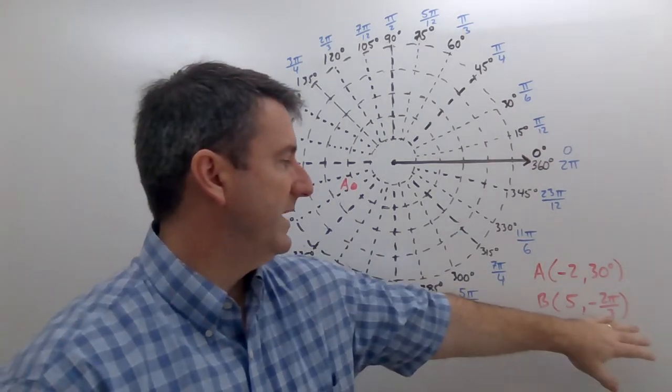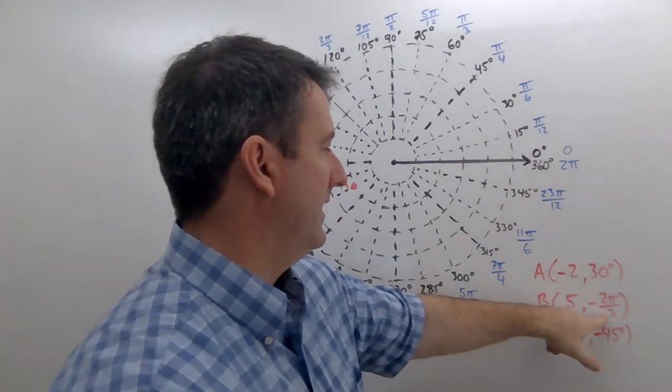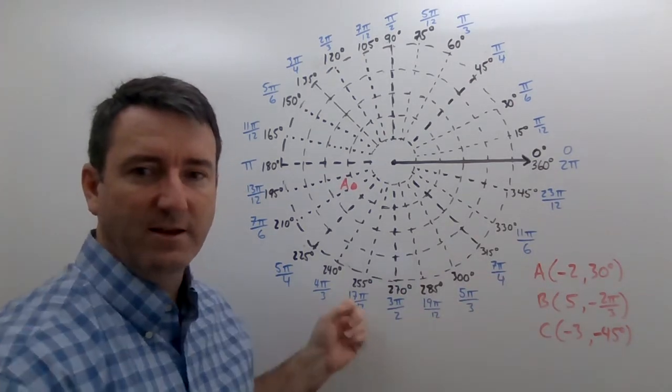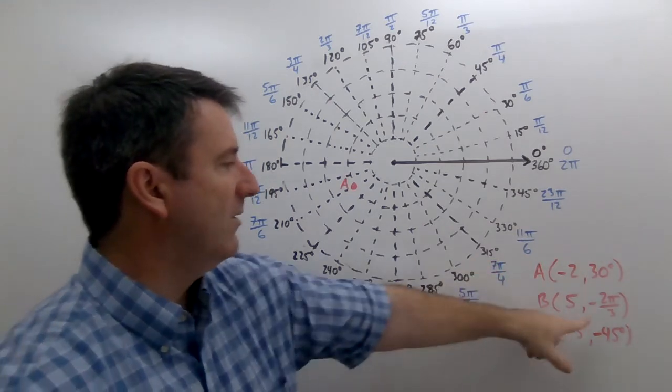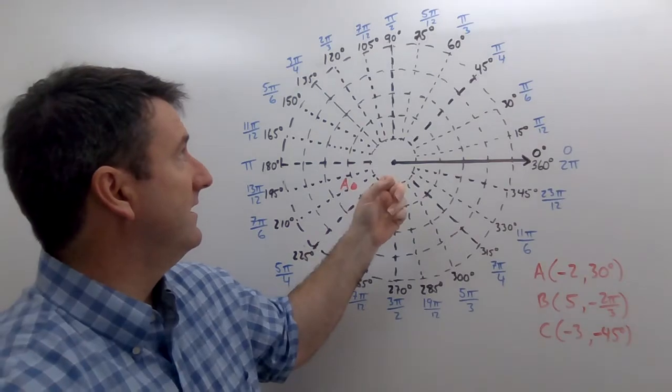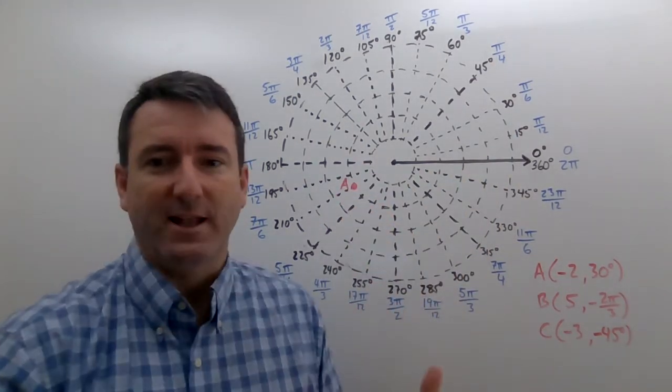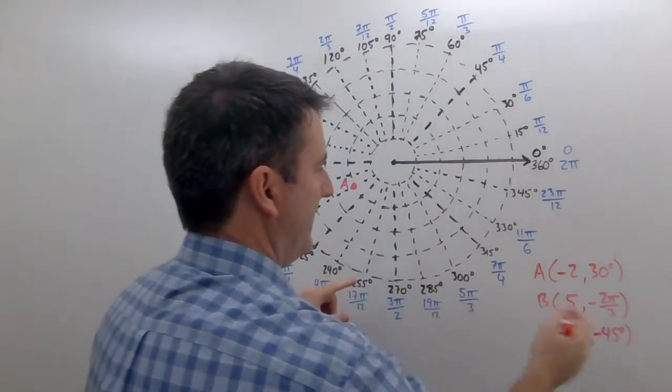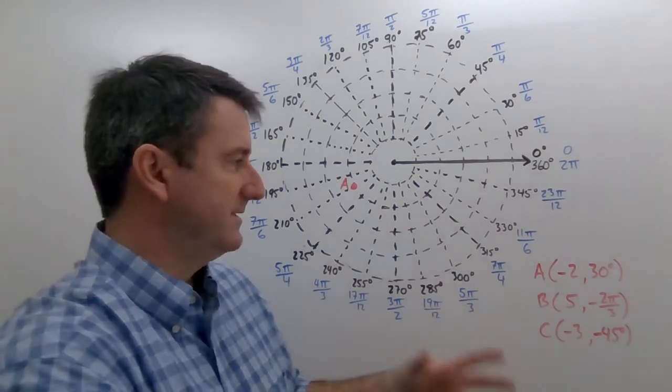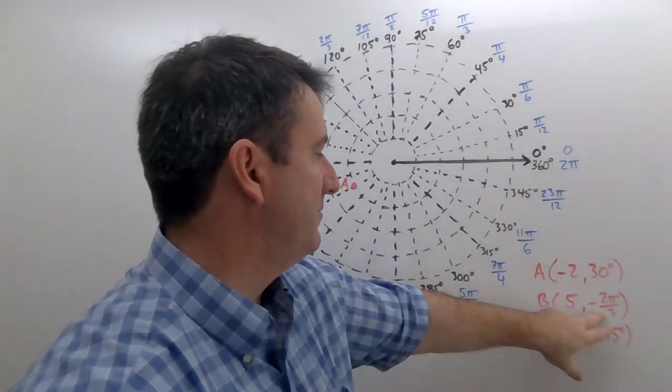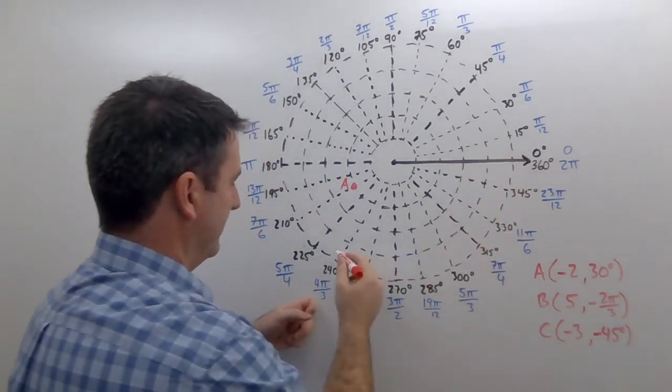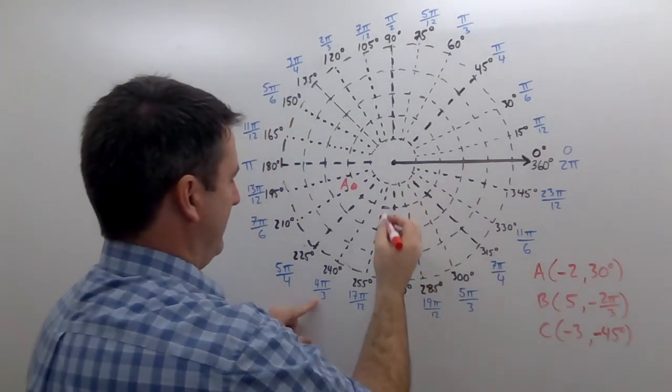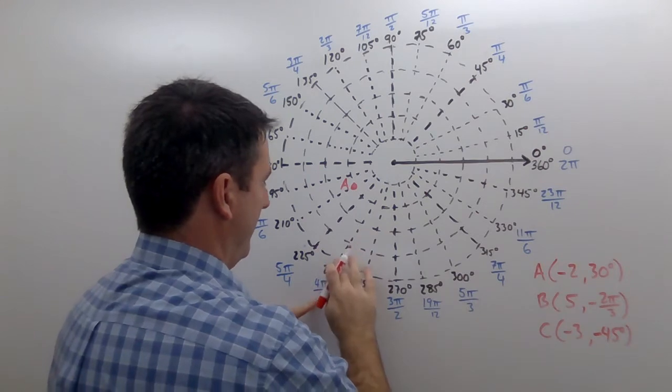All right, for B, we have a positive r, but a negative theta. So in measuring negative 2π over 3, we're going to go this direction, 2π over 3. Now, we don't have the negative angles labeled on here, but our negative angle, if we add 360 degrees, that's going to tell us what it would be as a positive angle. Or in this case, if we add 2π radians. So negative 2π over 3, if we add 2π radians, 2π is 6π over 3. So negative 2π over 3 is the same as 4π over 3. So if we come down here, this right here is the angle negative 2π over 3, coming out here at 4π over 3. And we're going to come out five units in this direction. So one, two, three, four, five down here. And that's going to be the point B.